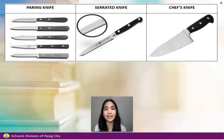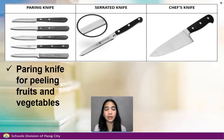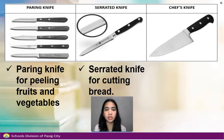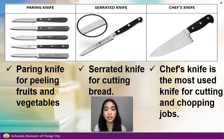It is good to have the following knives in your kitchen: Paring knife for peeling fruits and vegetables, serrated knife for cutting bread, and chef's knife — the most used knife for cutting and chopping jobs.